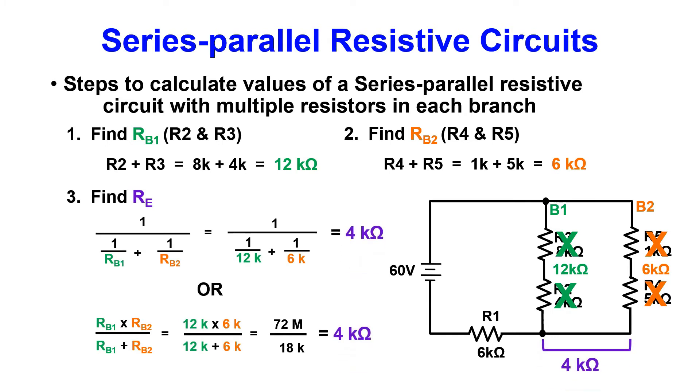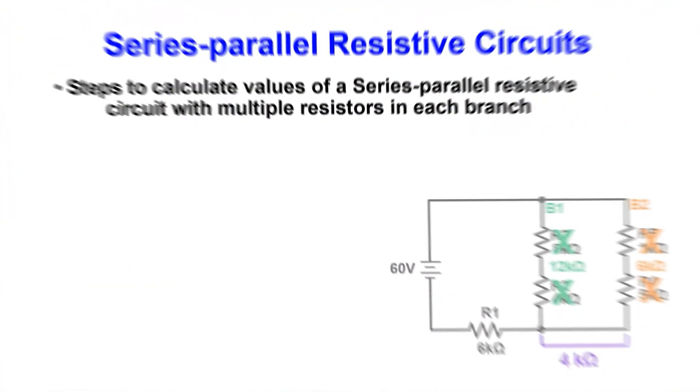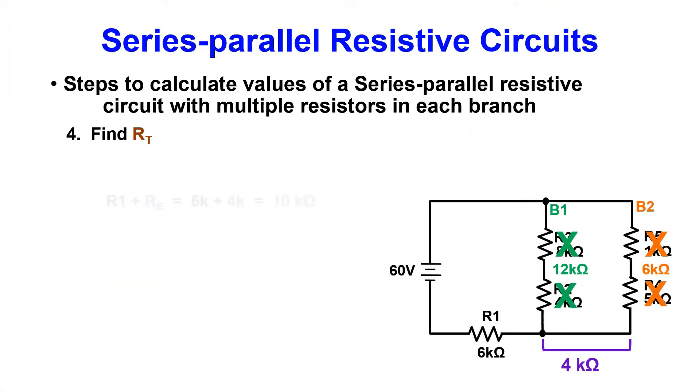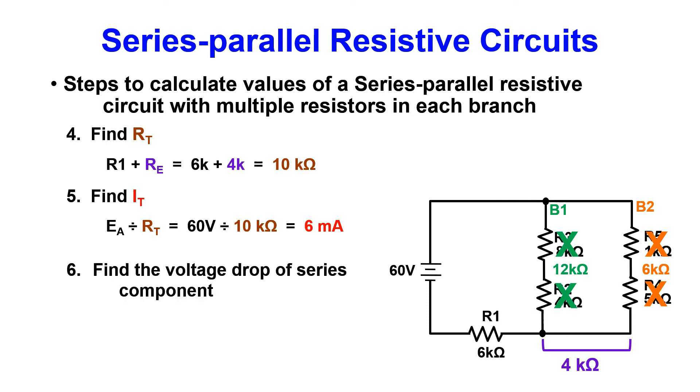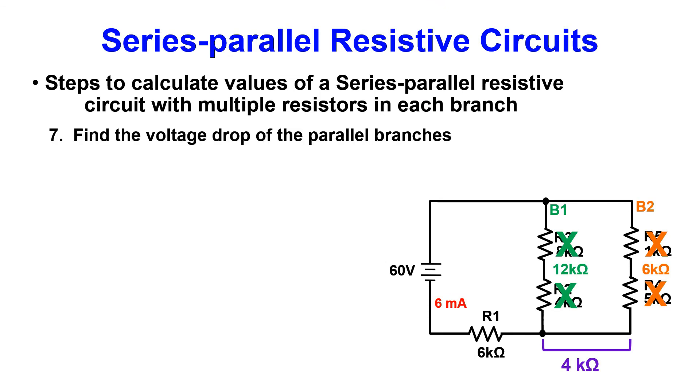The next step is to find the RT of the circuit. R1 which is 6k plus the RE of 4k will give us an RT of 10k. Now we can find IT. Using Ohm's law, 60 volts divided by 10k gives a total current of 6ma. The next step is to find the voltage drop of R1. 6ma times 6k of resistance gives us a voltage drop of 36 volts. The next step is going to be RE times IT. The RE of 4k times IT of 6ma gives a voltage drop felt across the parallel branches of 24 volts.